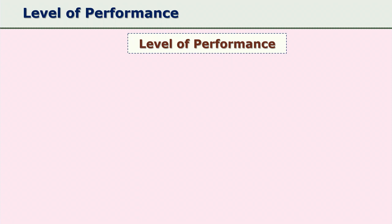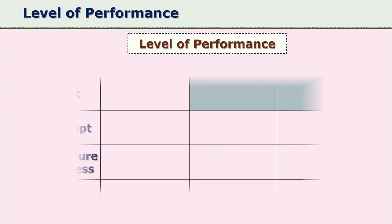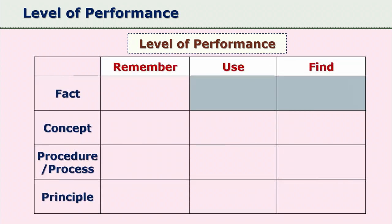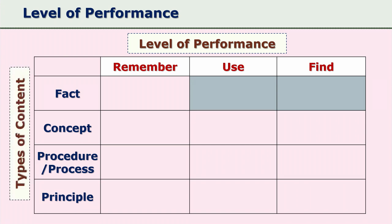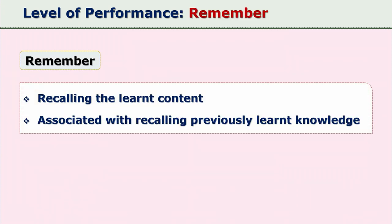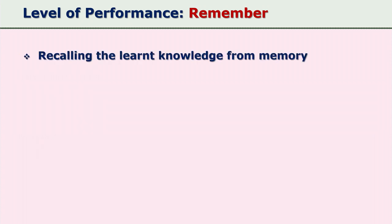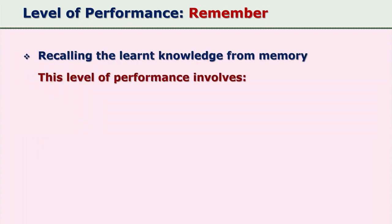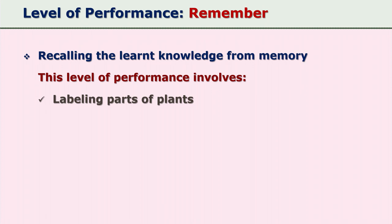The performance-content matrix also shows types of content in a column on the left-hand side. The first level of performance is 'remember,' which is associated with recalling previously learned knowledge. As the name suggests, it involves remembering or recalling from memory — the cognitive activity happening in the learner's mind is recalling learned knowledge.